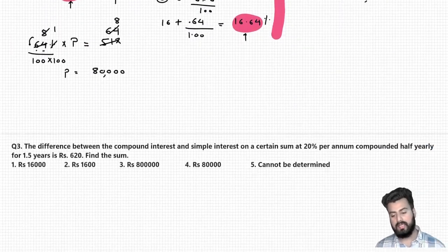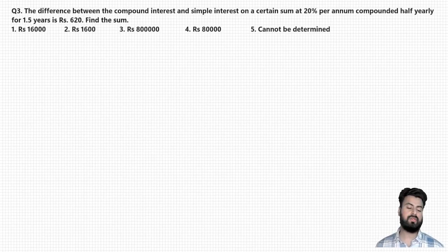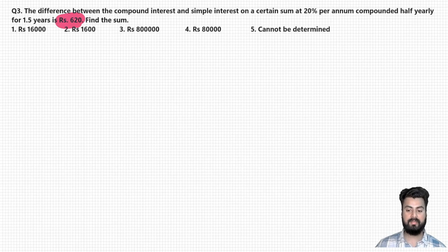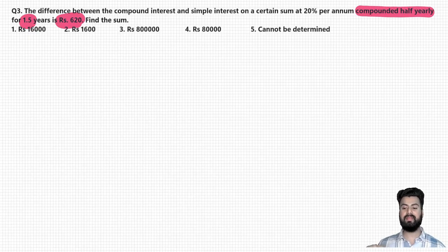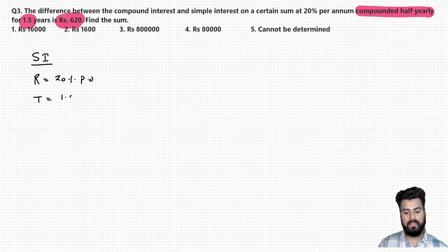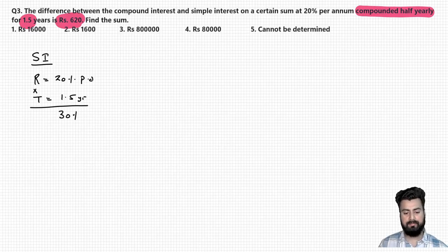Now let us discuss one last question based on the same type. The difference between the compound and simple interest on a certain sum at 20% per annum compounded half yearly for one and a half years is rupees 620. We have to find the principal. Let us first calculate the effective rate in case of SI: rate is 20% per annum, time period is one and a half years. Simply multiply rate and time: effective rate of interest at SI is 30%.